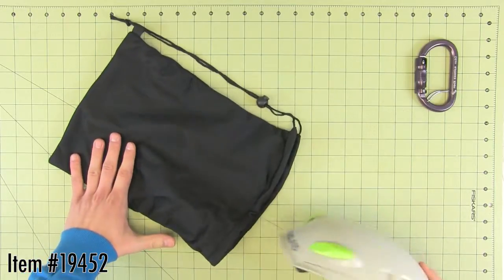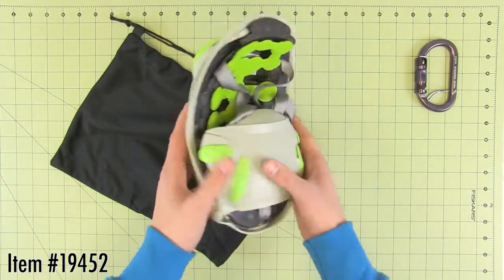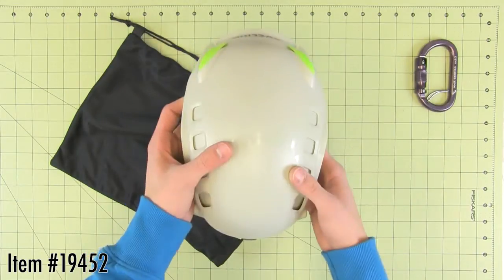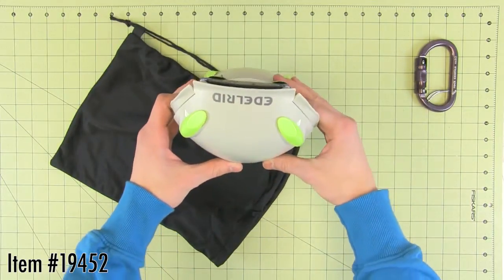Edelrid's Medeo helmet is the first and only foldable climbing helmet on the market. Its strong, impact-resistant shell is made from injection molded ABS plastic.